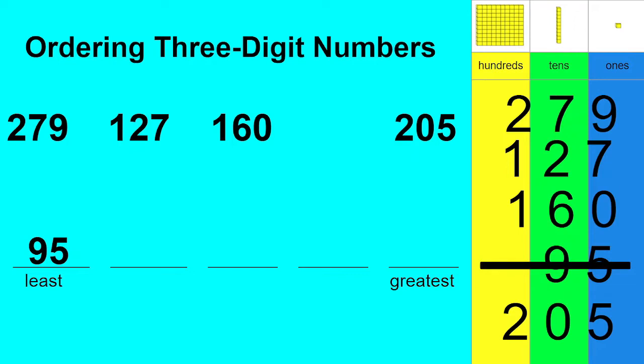All right, let's start by looking at the hundreds column again or the hundreds place. We have two numbers that start with 200 and two numbers that start with 100. 127 and 160. Both of these numbers have one group of 100. That's the same. So in order to know which one's smaller, we need to move over to the green column or the tens place.